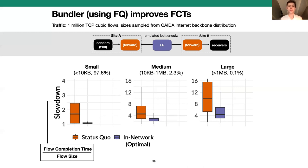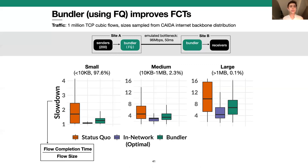With those as reference points, we removed the ideal scheduler and instead enabled Bundler at both sites, configured with the exact same fair queuing policy. Relative to the status quo, Bundler is able to reduce the slowdown of all flows across the board. Looking at the short flows — the ones we're really trying to help most with FQ — the median slowdown is close to optimal, and the tail slowdown is reduced by more than half compared to the status quo.